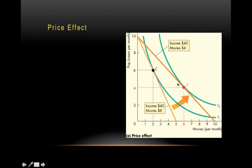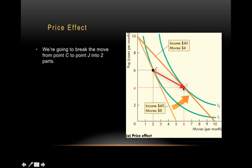This is the new budget constraint and she moves to the new welfare-maximizing point, point J. This move from point C to point J is the price effect. She consumes more movies, from two to six, and she consumes less pop, from six to four. This is the price effect.